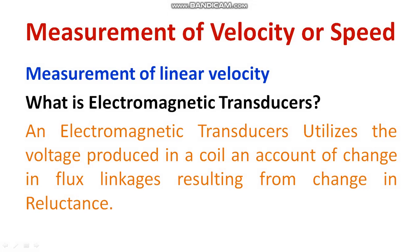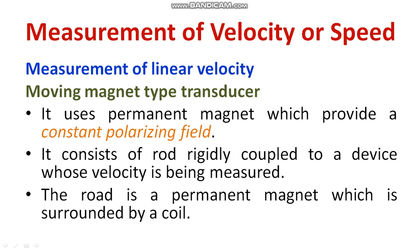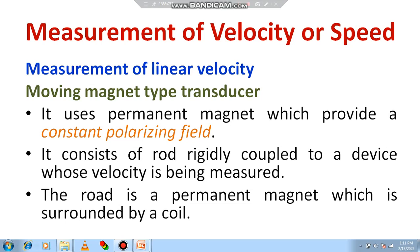Typically, you need to consider dynamically induced EMF. The working principle of a DC generator is based on dynamically induced EMF, while the working principle of a transformer is based on statically induced EMF. Now, how does moving magnetic type transducer work? How can you measure linear velocity using a moving magnetic type transducer? Let us look at the diagram.